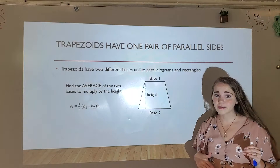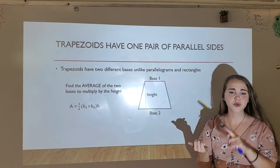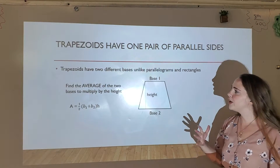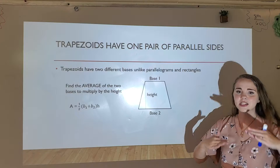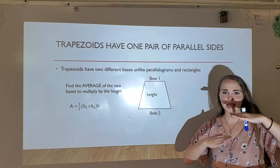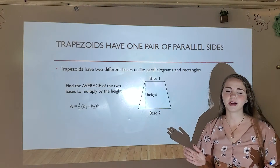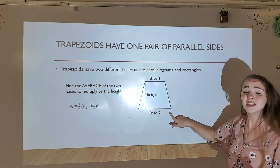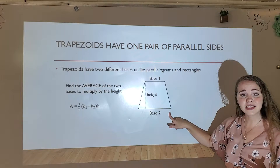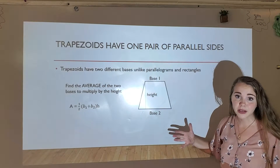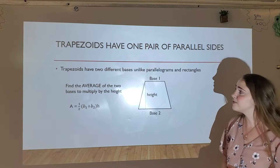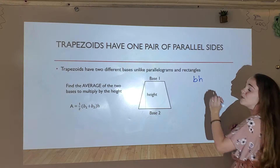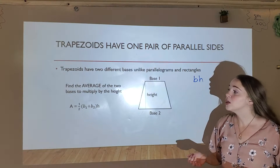We know parallelograms — that includes squares, rectangles, rhombuses — we know that their bases are the same because they have two sets of parallel sides. But since trapezoids only have one set of parallel sides, the bases are not the same. So instead of just doing base times height, we can't do that because the bases aren't the same.